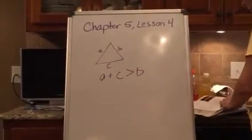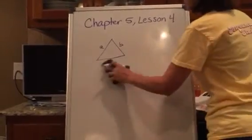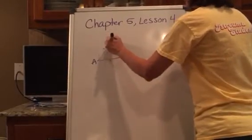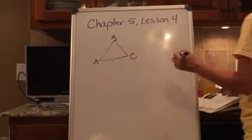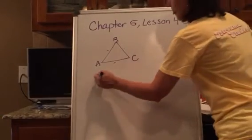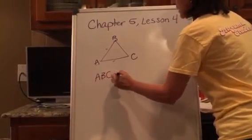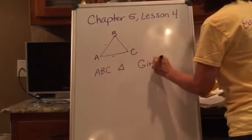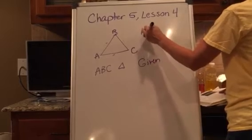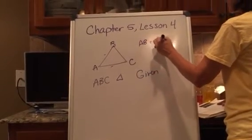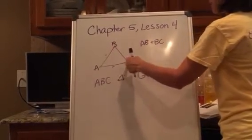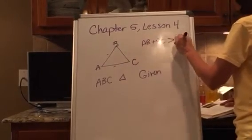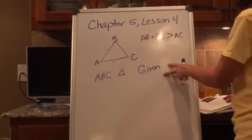If we have triangle ABC, and it is given that ABC is a triangle, that would be given. And I wanted to prove that AB plus BC, the sum of those two sides, is greater than the length of AC. I would begin with my given, right?